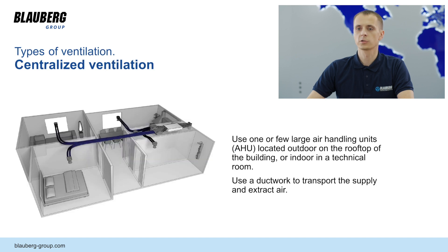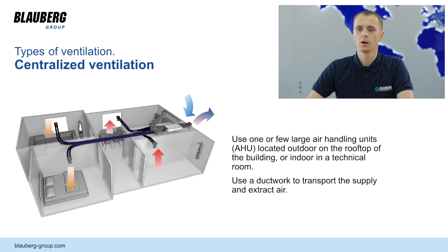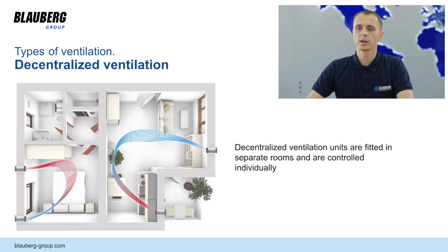Now let's look at two main types of ventilation: centralized and decentralized, with their advantages and disadvantages. In centralized ventilation, we usually see one or a few large air handling units located outdoors on the rooftop or indoors in a technical room, and a ductwork system to transport the supply and extract air. Decentralized ventilation units are fitted in separate rooms and are controlled individually.